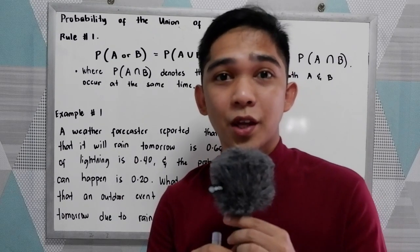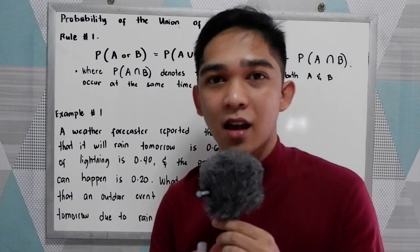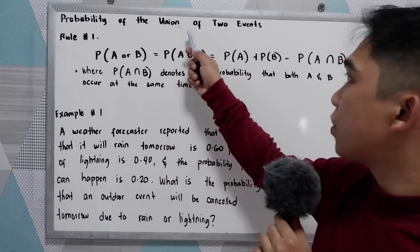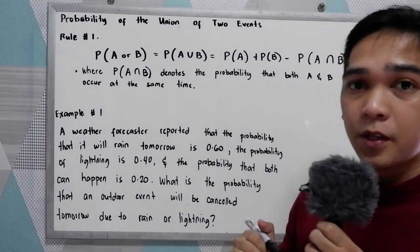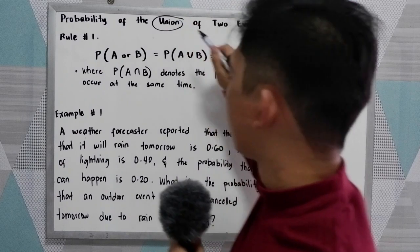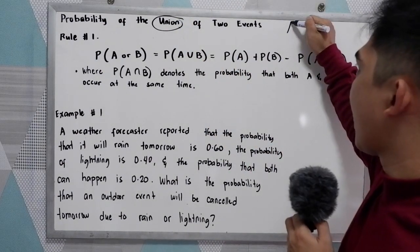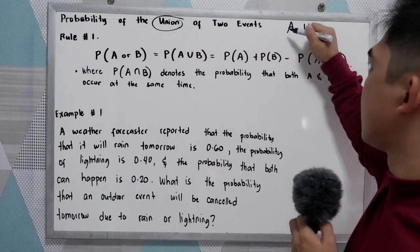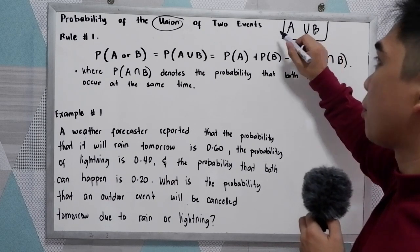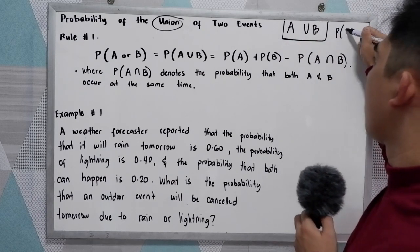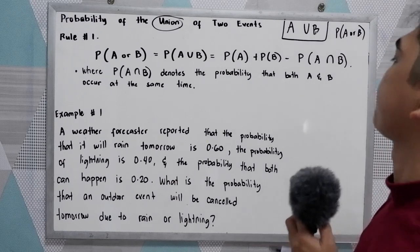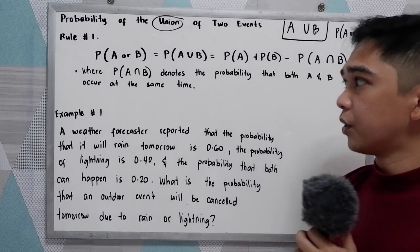Good day everyone. Today I will be discussing the probability of the union of two events. So we have the union — let's say we have A union B, or a probability of A or B. And our first rule: